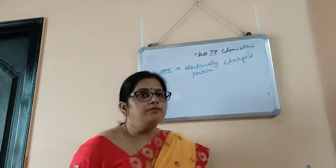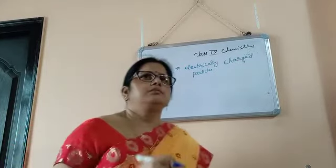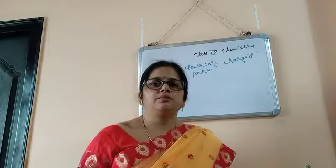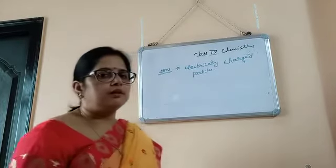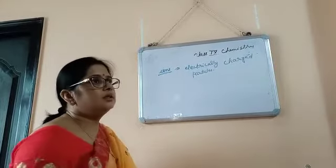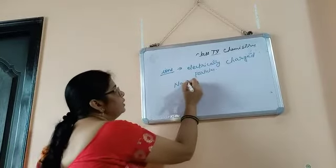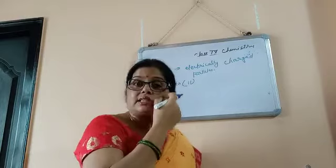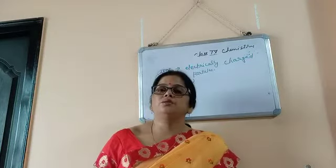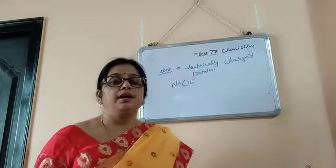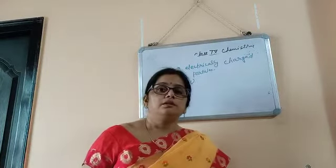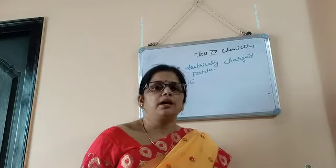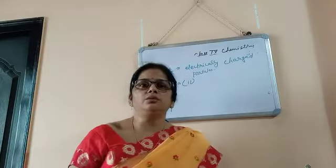You have to remember the atomic numbers of some elements, 1 to 20 in the periodic table. As I taught you in the very first lesson, noble gases are highly unreactive because they follow the octet rule — in their outermost orbit 8 electrons are already filled, so they don't need to become stable.